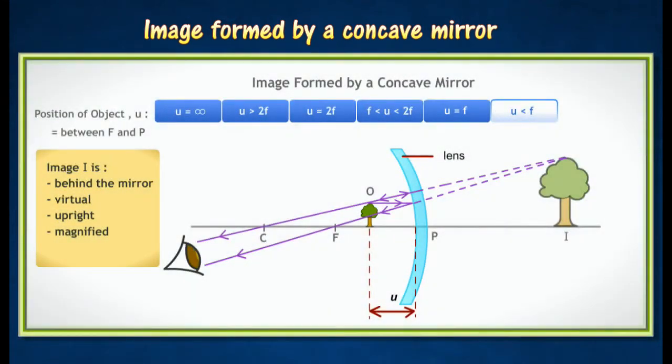When the object is placed in between F and the mirror, the image will appear behind the mirror. The image formed is virtual, upright and magnified.